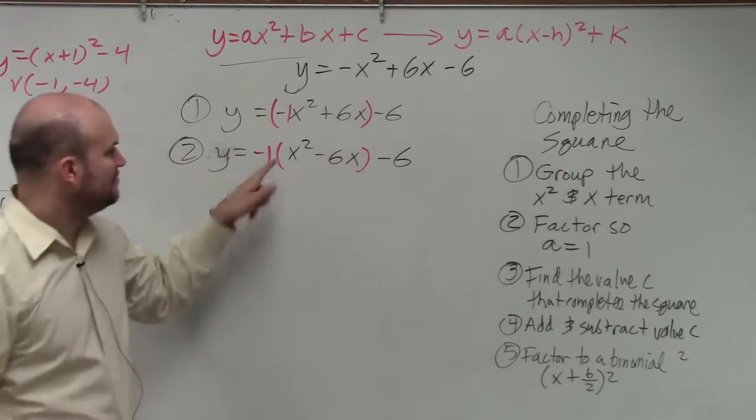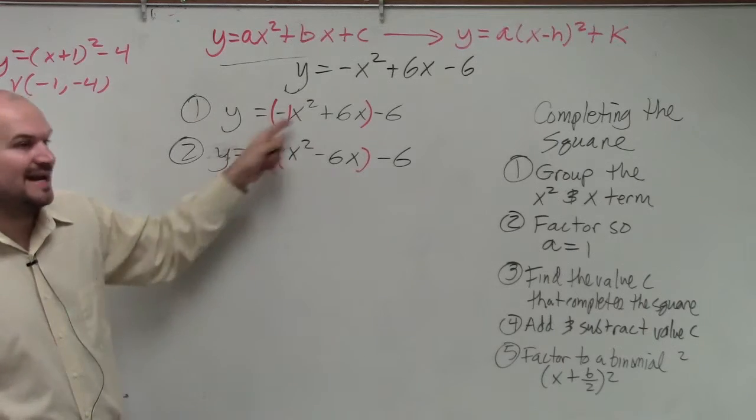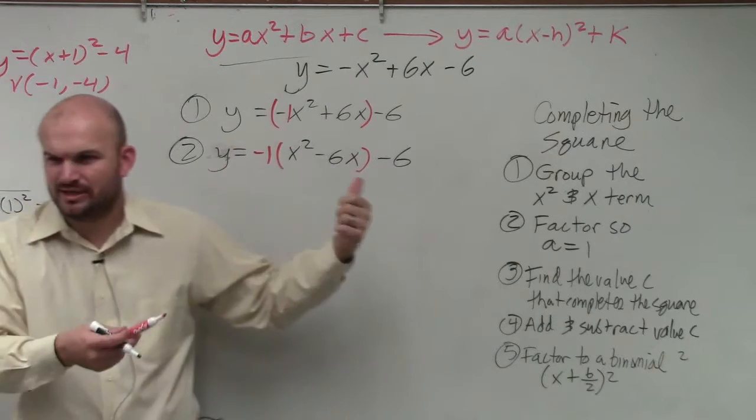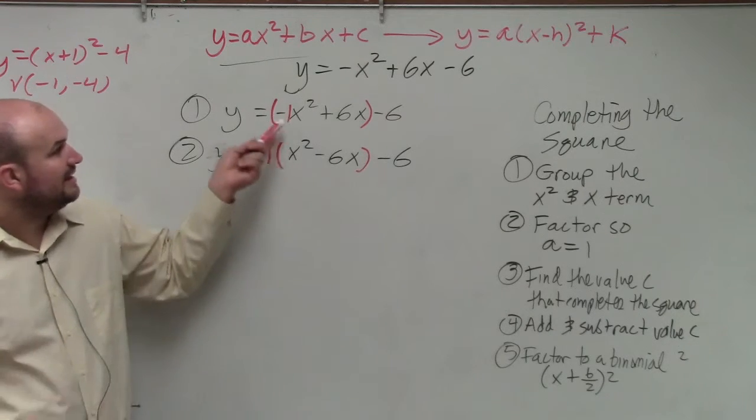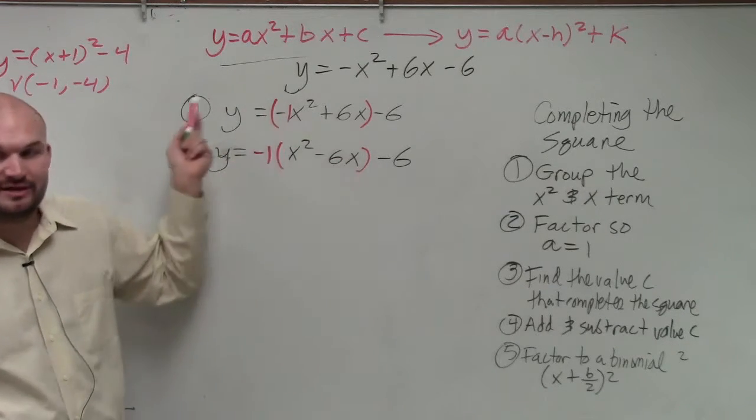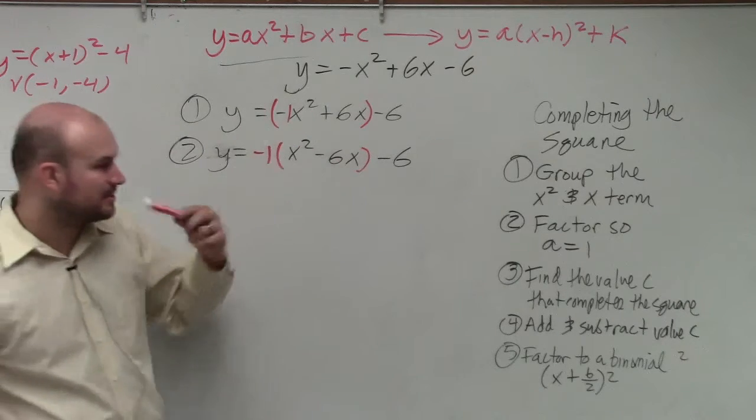Does everybody see? Remember, when you factor out a negative 1, you're basically dividing each term by negative 1. Kind of like what we did in our word. Yes? x squared. It already was negative. So if you divide out a negative, it's a positive. And you could create a box if you wanted to, if you're having trouble with that.